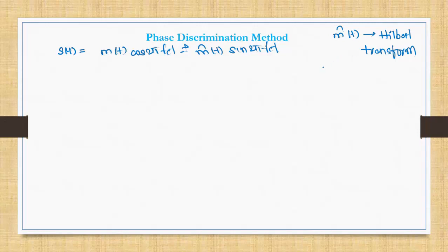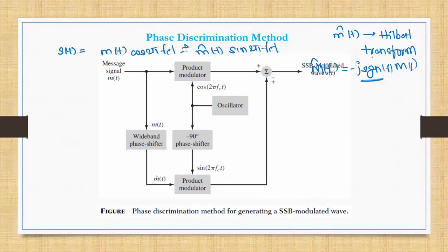In the frequency domain, if M(f) is the spectrum of m(t), then the spectrum of the Hilbert-transformed signal is minus j times the signum function of f, multiplied by M(f). Since the signum function is plus or minus 1, in simple words the spectrum of the Hilbert-transformed signal is the same as M(f) except in phase — the phase difference is plus or minus 90 degrees.